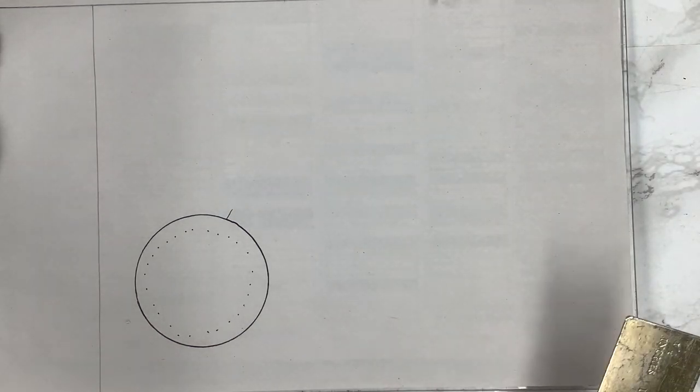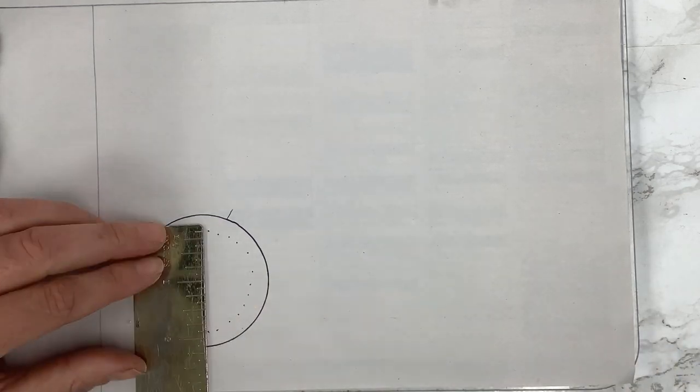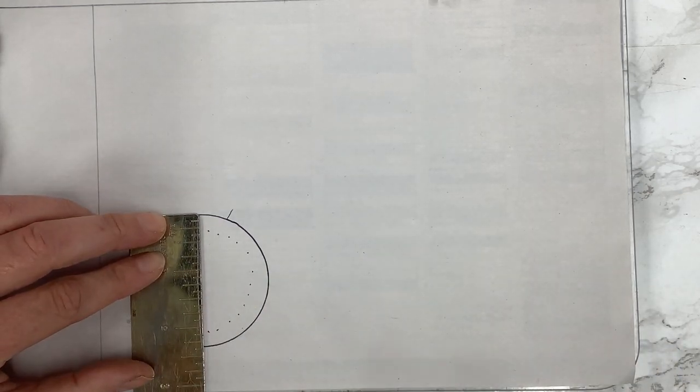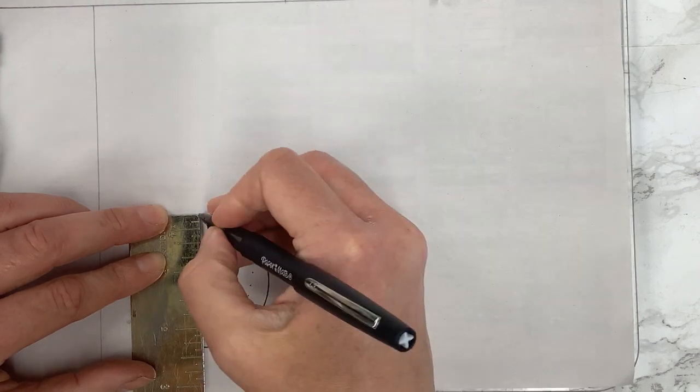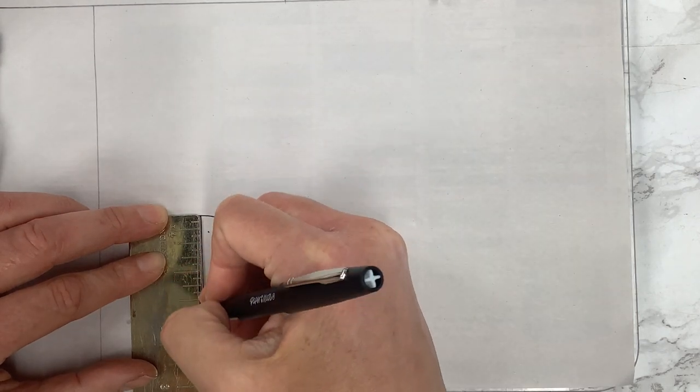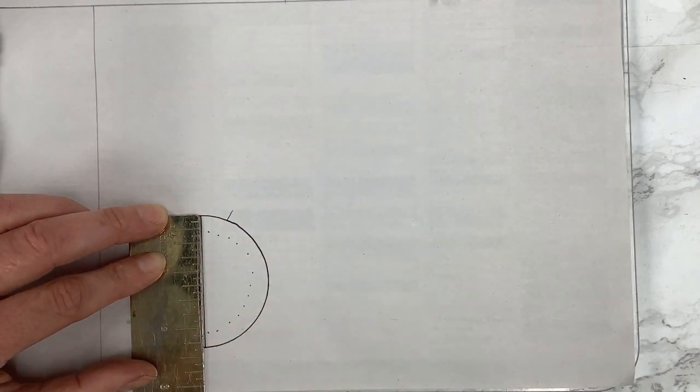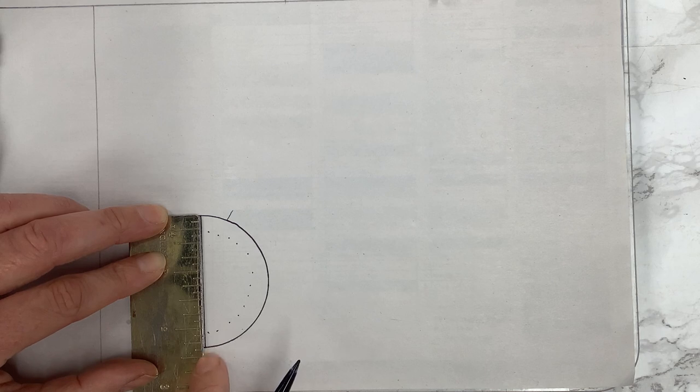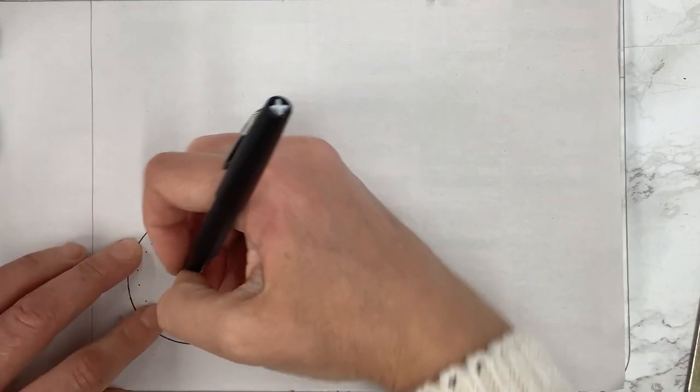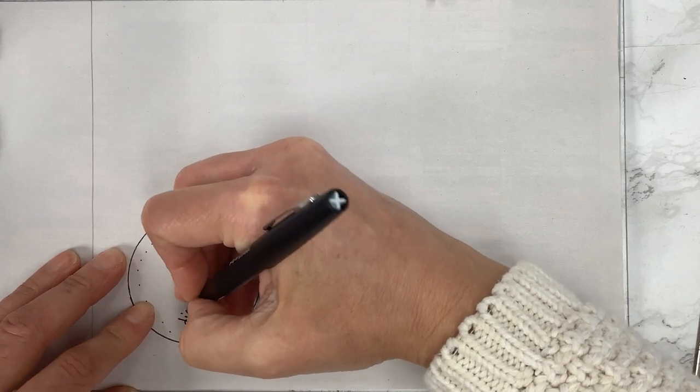So I will show you the math way first. If you're doing it using math you need to figure out the diameter which is basically straight across the circle. So you don't have to draw a line but I'm going to draw a line here just so you can kind of visualize. So mine is two and three-eighths. Just to make my math easier I'm going to round up to two and a half.